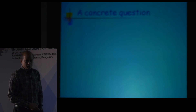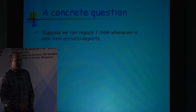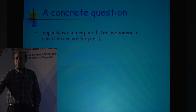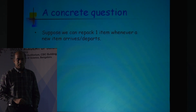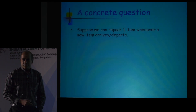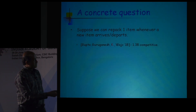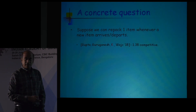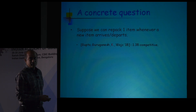Let me pose a concrete question: suppose whenever a new item arrives, I allow you to take one existing item and move it somewhere else. What can we prove? We can prove that if you allow just this small amount of flexibility — even when items are moving out — you will be only 38% worse off.